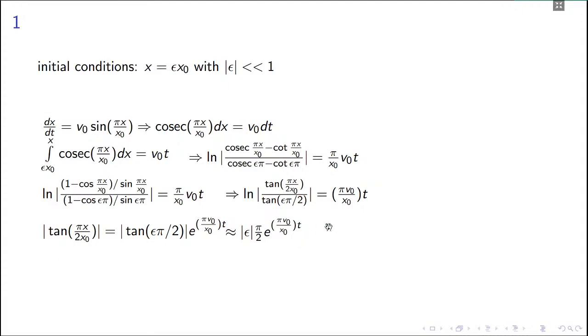And if x is minus x₀, then tan is minus π/2, and that is minus infinity. But there is a mod sign here, so this is again infinite, so t will again be infinite in case it goes to minus x₀.